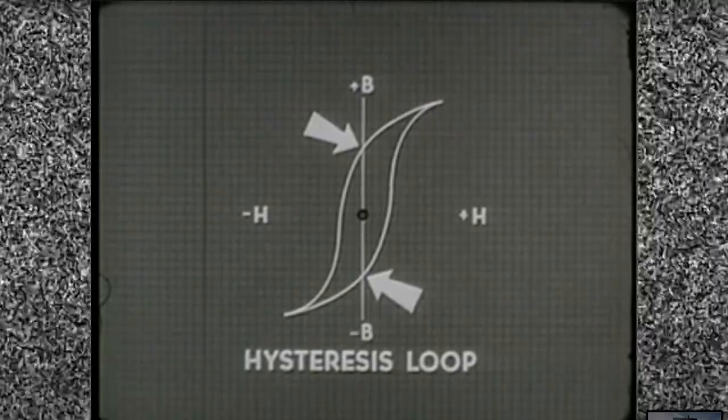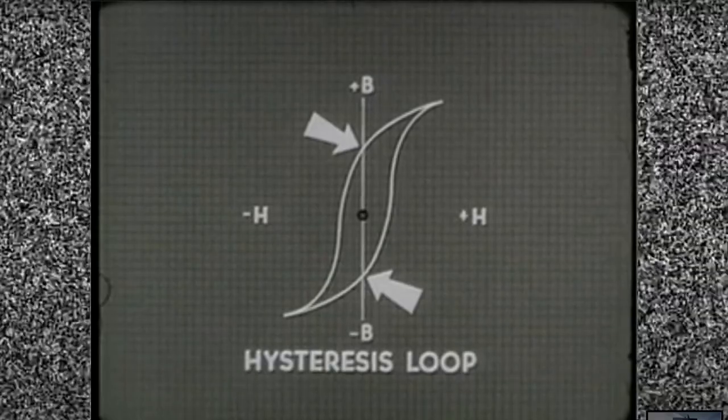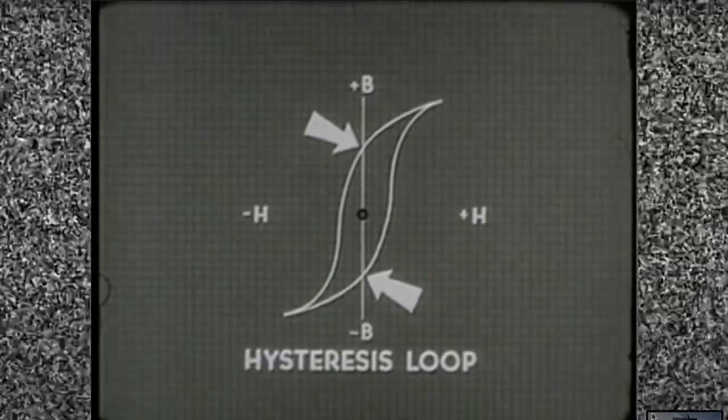Shallow rounded loop, low residual magnetism. A core of this type obviously requires less force during a switch from one state to the other.